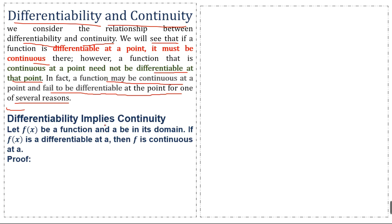Differentiability implies continuity: this means if a function is differentiable, then the function will also be continuous. Let f(x) be a function and let a be a point on its domain. If f(x) is differentiable at a, then the function f is continuous at a.